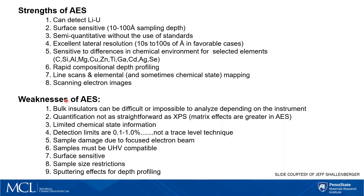Some of the weaknesses of the technique occur when we try to analyze insulators. Bulk insulators can be very difficult or impossible to analyze depending on the instrument, and this is the reason why Auger has not become as ubiquitous as XPS. Quantification in Auger is not quite as straightforward as it is for XPS because the matrix effects are greater. We get limited chemical state information compared to XPS. The detection limits are about the same — 0.1 to 1 atomic percent depending on the element. We have to worry about sample damage from the focused electron beam, samples must be UHV compatible, there are always sample size restrictions, and there are sputtering effects associated with depth profiling.